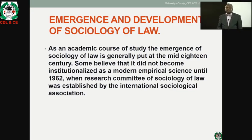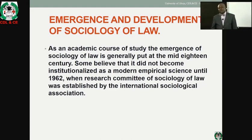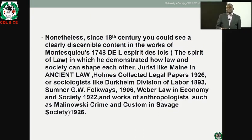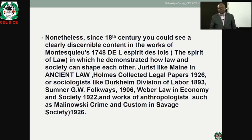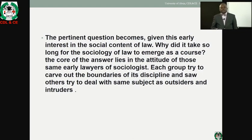As an academic course of study, the emergence of sociology of law is generally put at the mid-18th century. Some believe it did not become institutionalized as a modern empirical science until 1962, when a research committee on sociology of law was established by the International Sociological Association. Since the 18th century, clear discernible content could be seen in the work of Montesquieu — that is, The Spirit of Law — demonstrating how law and society can shape each other. There were also jurists and sociologists such as Durkheim's Division of Labor of 1893, Sumner, and others whose views are relevant to this course.